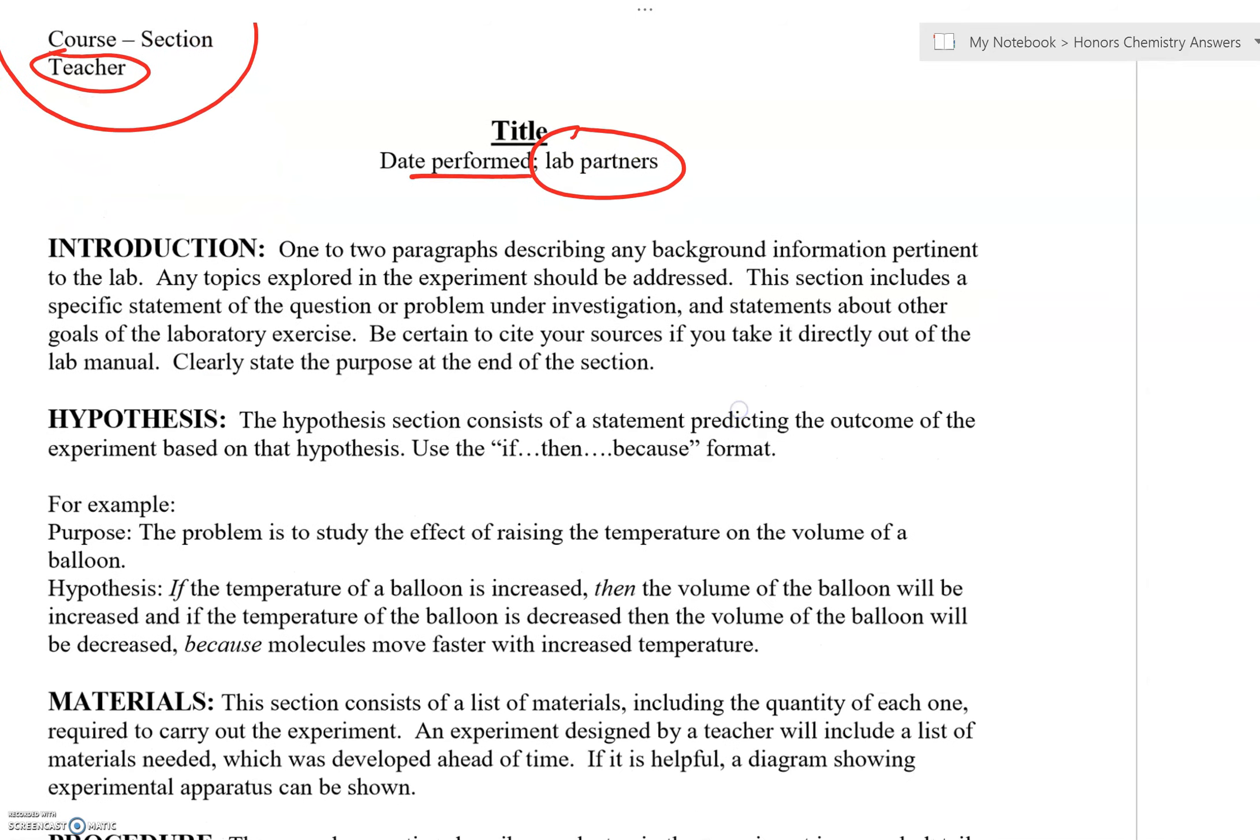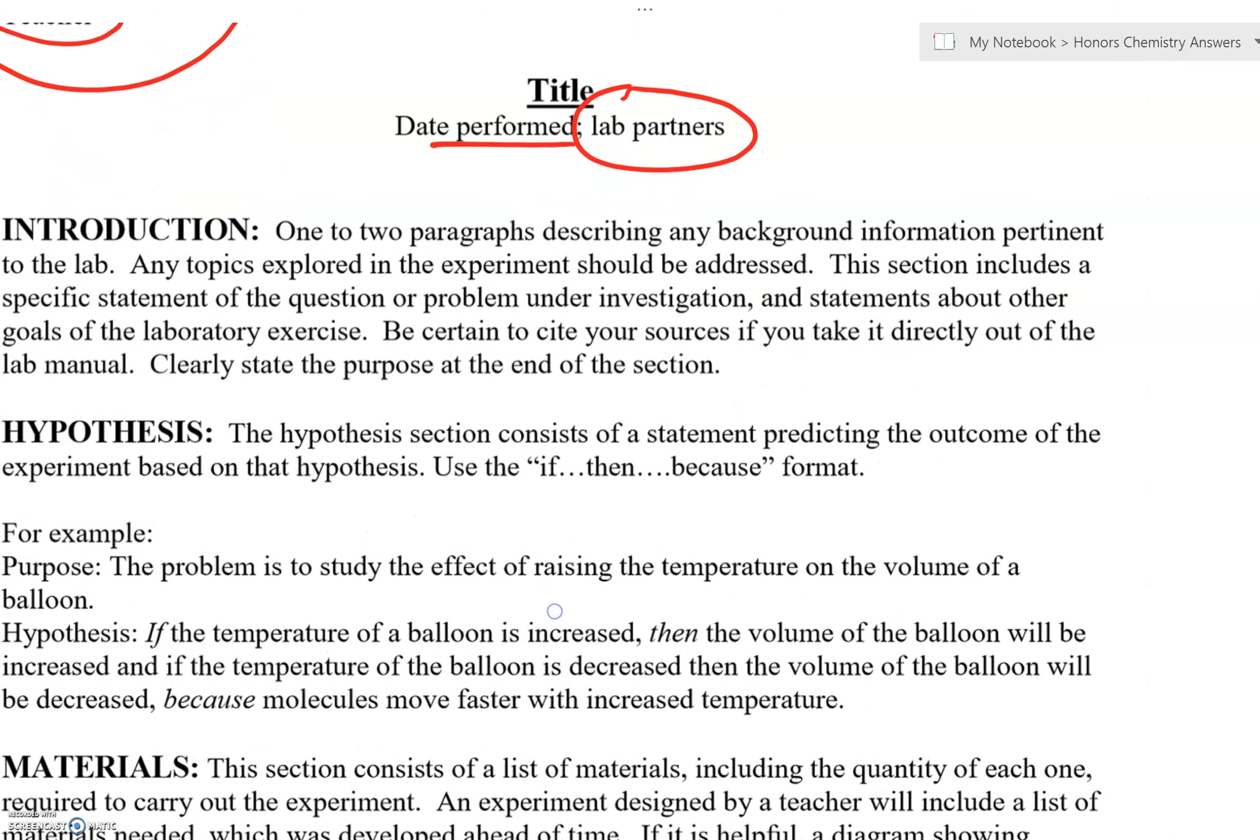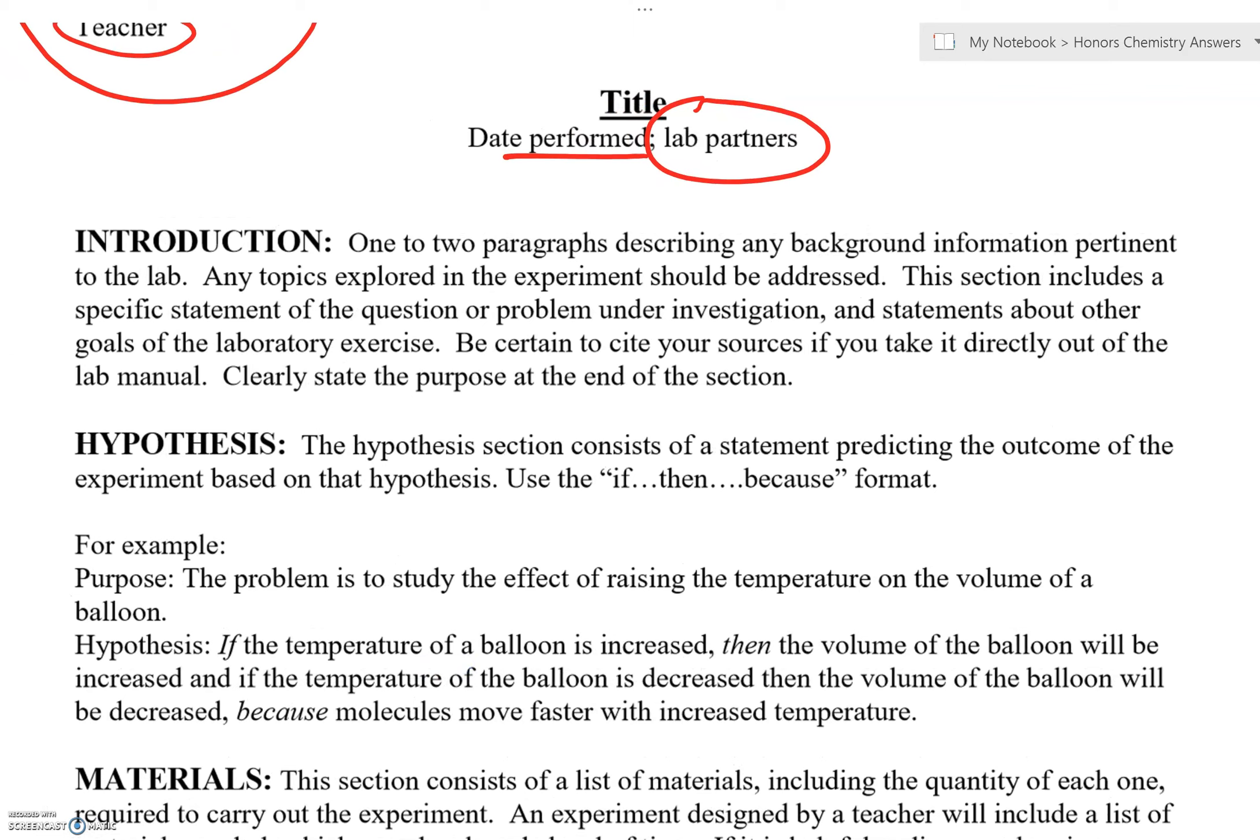Okay, introduction. This is where we run into some issues. It says one to two paragraphs describing any background information pertinent to the lab. Okay, in this case, who's Hess, what's Hess's law, what does it mean, what is enthalpy, what are changes in enthalpy, exothermic, endothermic, and how are we going to apply these? One to two paragraphs. Remember that a paragraph is three to four sentences, so try to include at least that many and try to cover the details.